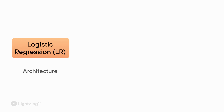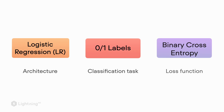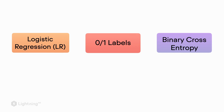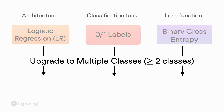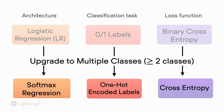Let's now talk about the cross entropy loss for multiple classes. In unit three we talked about logistic regression, which works for zero and one class labels, and we used the binary cross entropy loss. Now we upgrade this to work with multiple classes. In the previous three videos we saw how we can upgrade logistic regression models to softmax regression models.